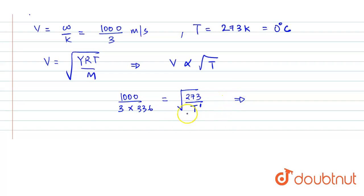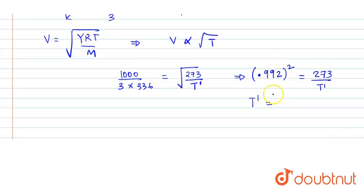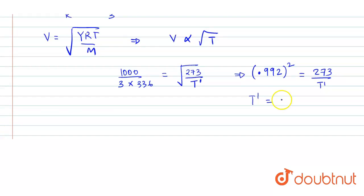From here, we have to find the value of T dash. So this value is 0.992 equals root 273 by T dash. So its square will be 273 upon T dash. So the value of T dash will be 273 divided by 0.992 square, which is approximately 0.984, and this gives us 277.4 Kelvin.